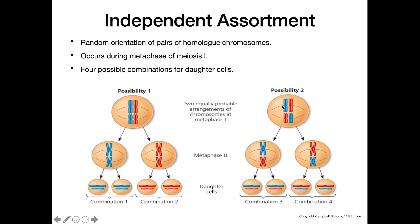So if we have this other situation, we can see that as these homologous chromosomes get pulled apart during meiosis one, and then sister chromatids get pulled apart during meiosis two, we end up with different combinations of genetic material in these daughter cells.